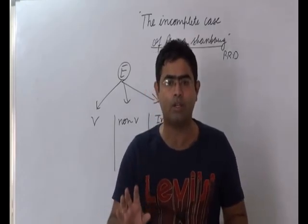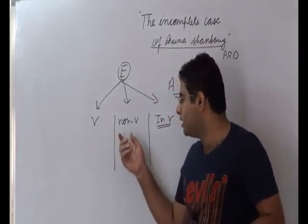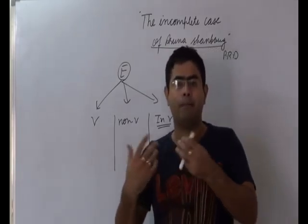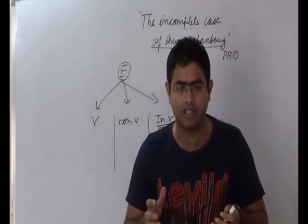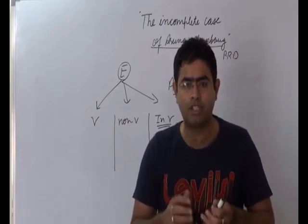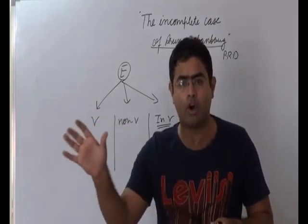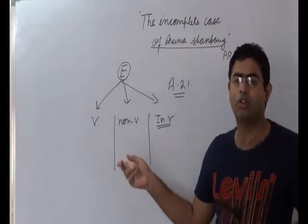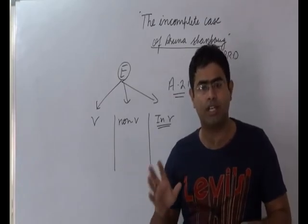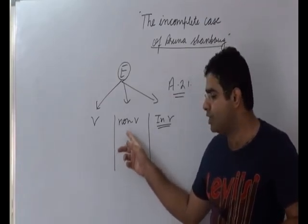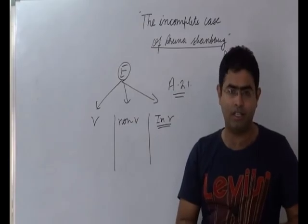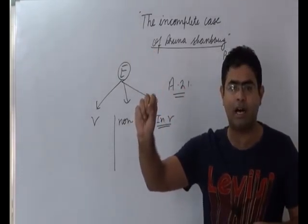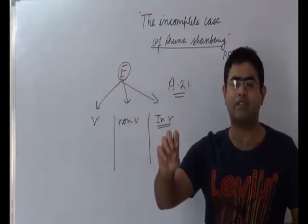Another type is non-voluntary euthanasia, where a person is not capable enough to give his consent for administering something which might cause his death. That kind of euthanasia is known as non-voluntary euthanasia. Non-voluntary euthanasia is further divided into two types: active non-voluntary euthanasia and passive non-voluntary euthanasia.